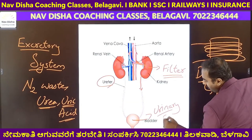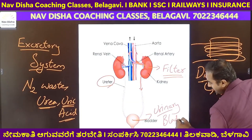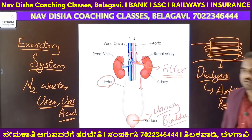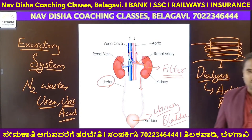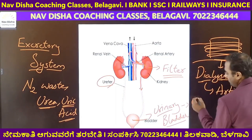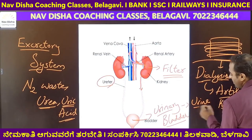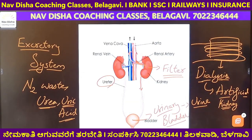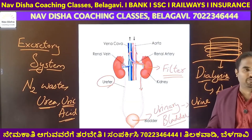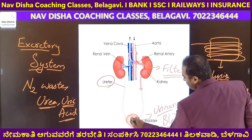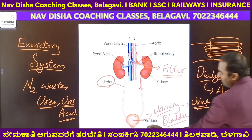The waste comes out via the ureter — a main tube connected to the urinary bladder. There are two bladders: one is the urinary bladder, and the other is the gallbladder. The gallbladder stores bile juice, and the urinary bladder stores urine. This bladder is a bag-like structure; when it gets filled, you feel pressure and go to the washroom.